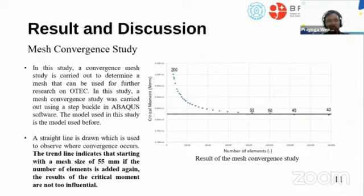Mesh convergence study: In this study, a convergence mesh study is carried out to determine the mesh that can be used for further research on OTEC. In this study, a mesh convergence study was carried out using the step buckle in Abaqus software. The model of this study is the model used before. A straight line is drawn which is used to observe where the convergence occurs. The trend line indicates that starting at a mesh size of 55 millimeters... Let's move to the conclusion because the time has almost finished.